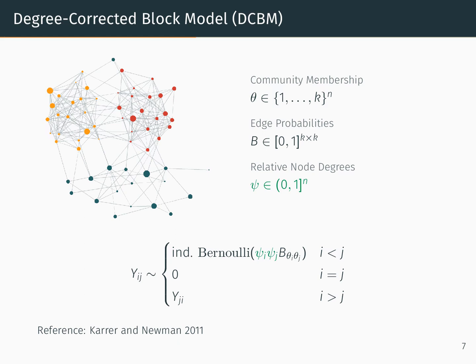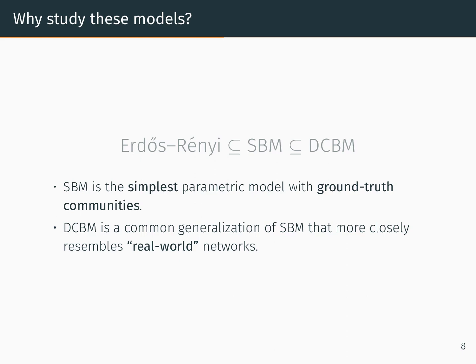We'll also look at one popular extension to SBM called the degree-corrected block model. In the degree-corrected block model, we have one additional parameter psi, which is a vector of length n that takes values from 0 to 1. This parameter effectively allows us to scale nodes to allow for more degree heterogeneity, so that nodes with a larger value of psi will have a higher expected degree than those with lower values of psi. SBM is the simplest parametric model with ground truth communities and can be thought of as a generalization of the simple Erdős–Rényi graph. DCBM in turn is a generalization of SBM that allows for networks that more closely resemble real-world networks.